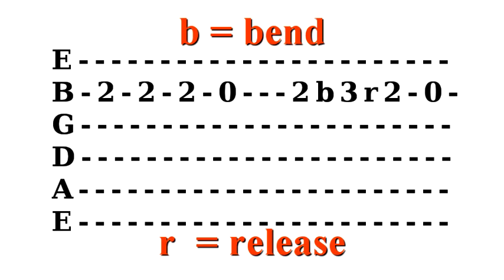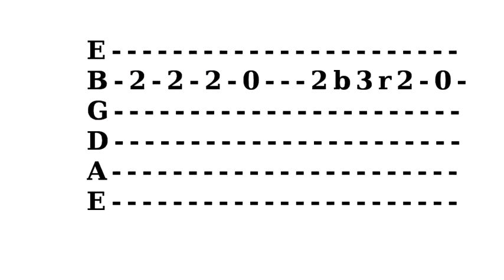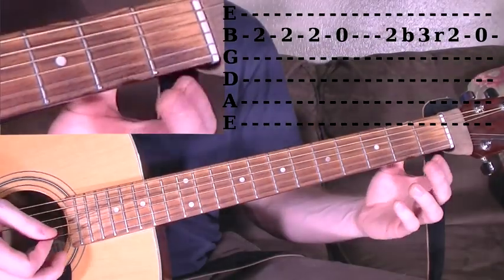The opposite of a bend is a release. In the example shown, we will bend the second fret until it sounds like the third fret, and then we will release the bend so that the note at the second fret can be heard once more. Check it out.